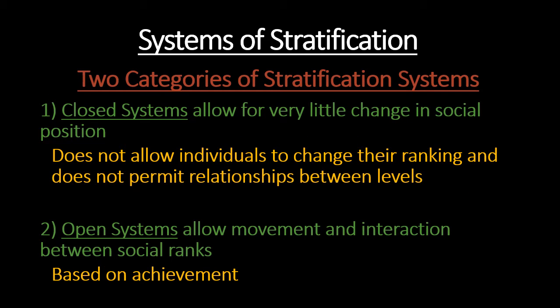There are two categories of stratification systems: closed or open. A closed system means very little change in social position is allowed — it does not permit individuals to change their ranking or allow relationships between different socioeconomic levels. Open systems allow movement and interaction between social ranks and are more geared toward individual achievement, so someone who works hard and achieves a lot can move up in social rank regardless of their parents' position.